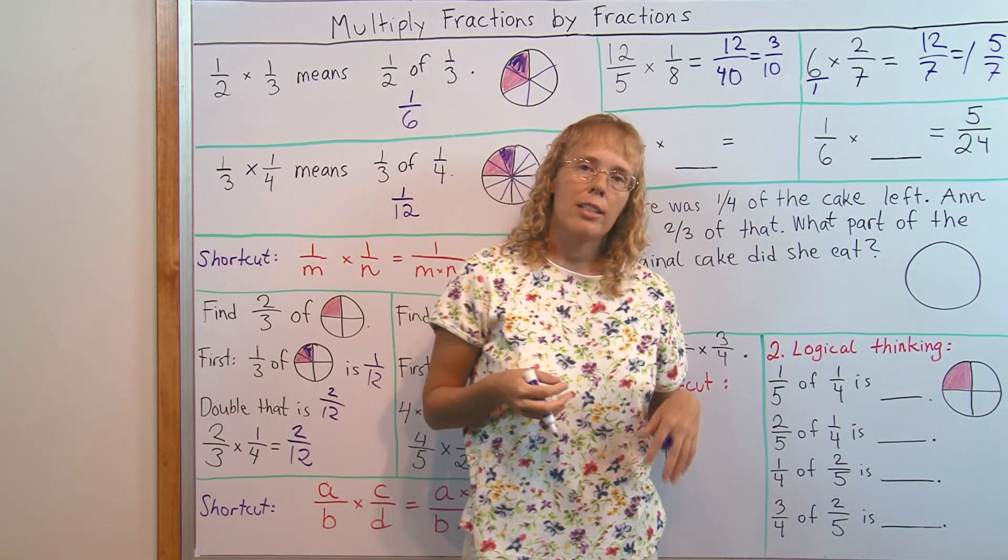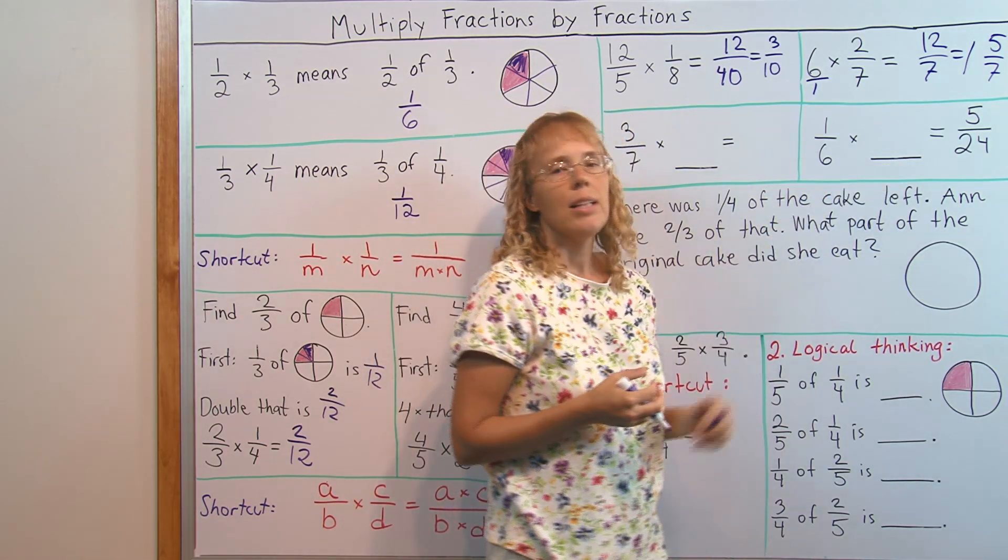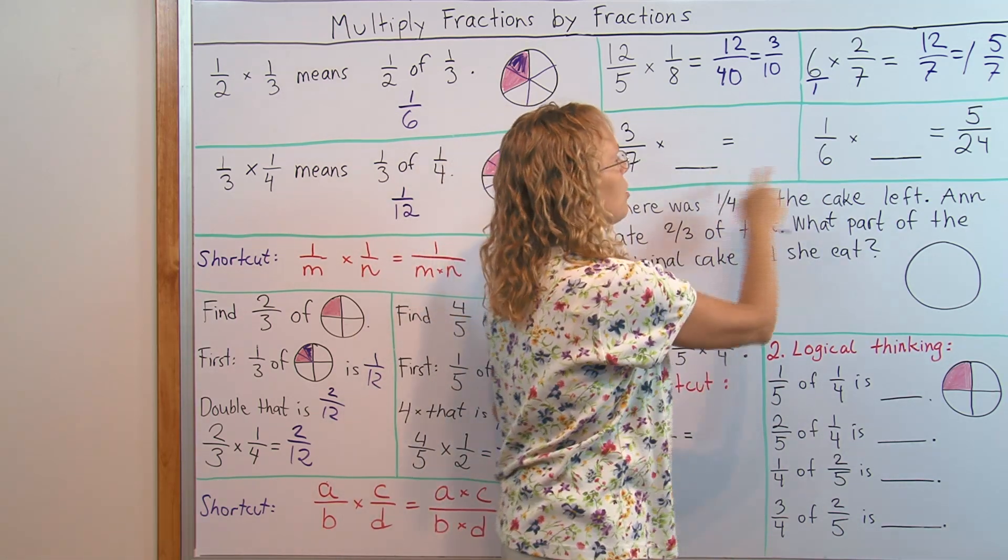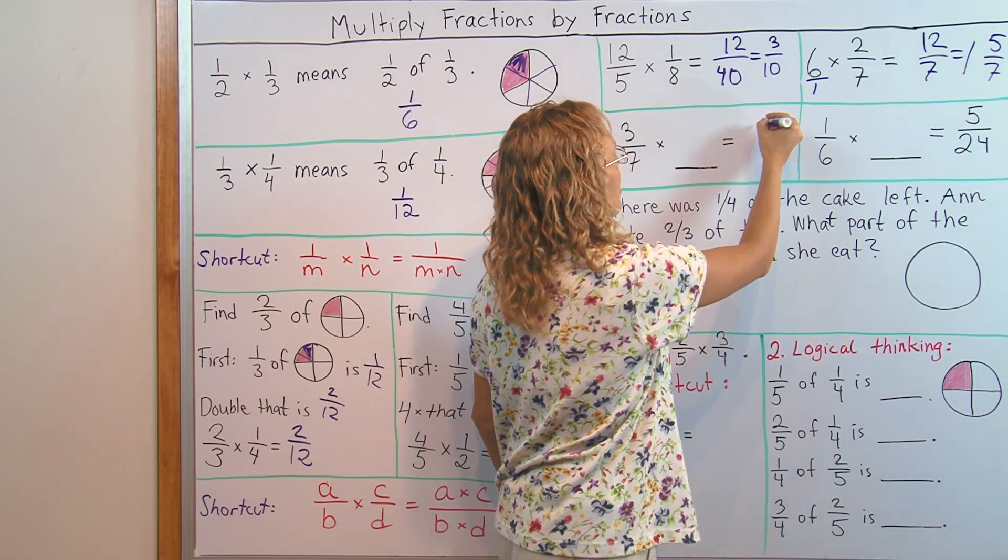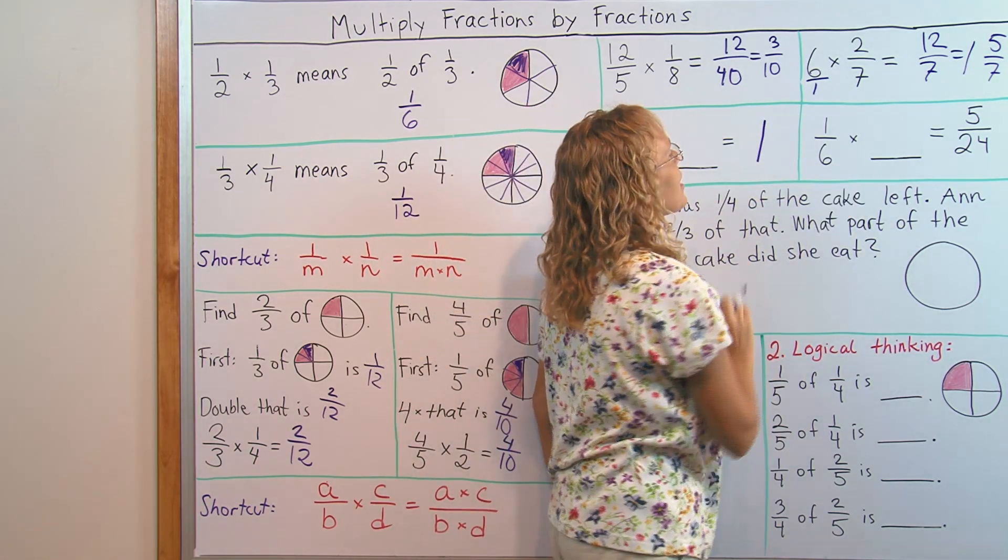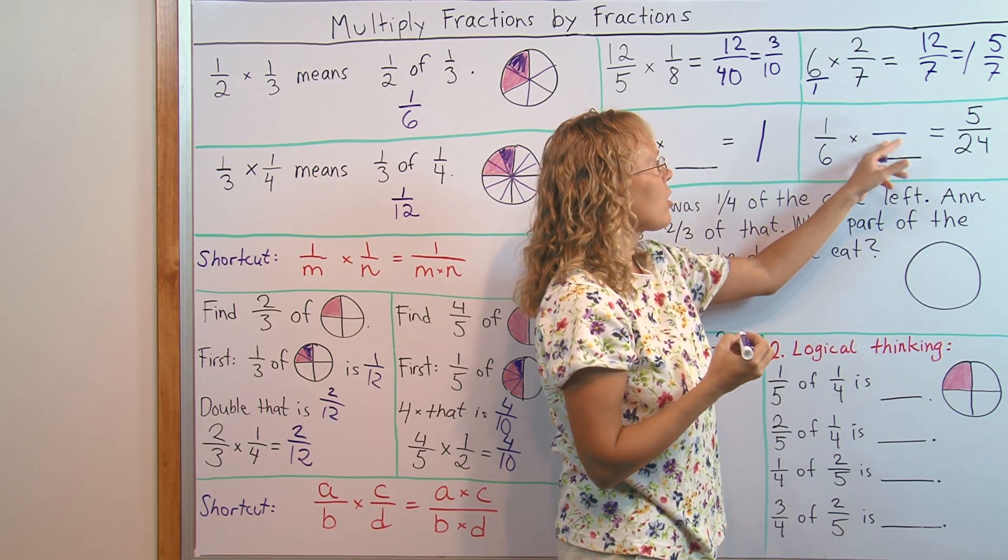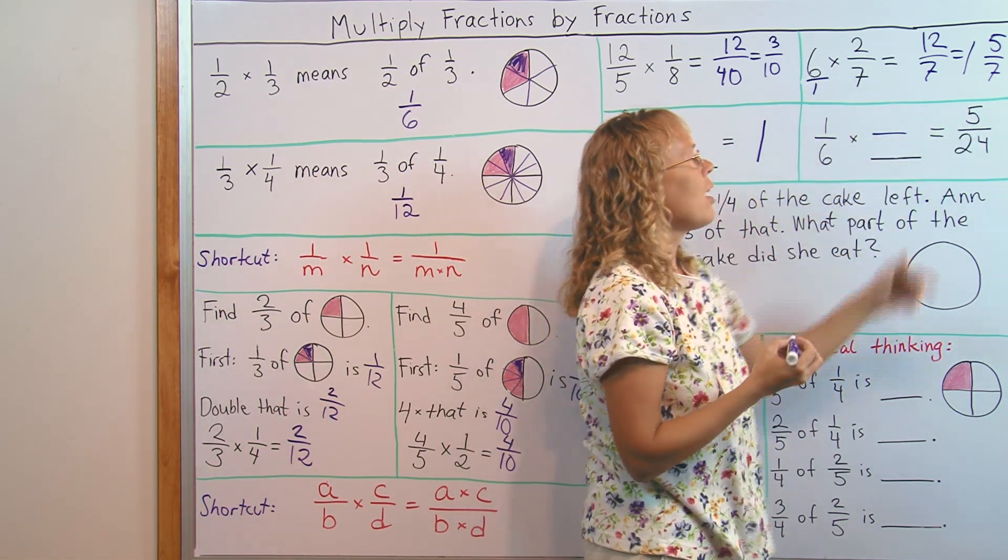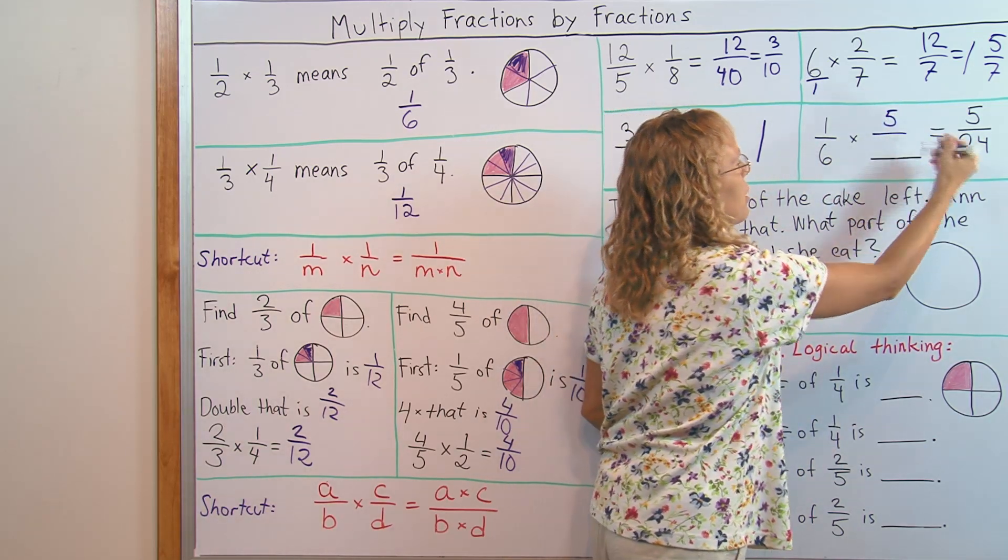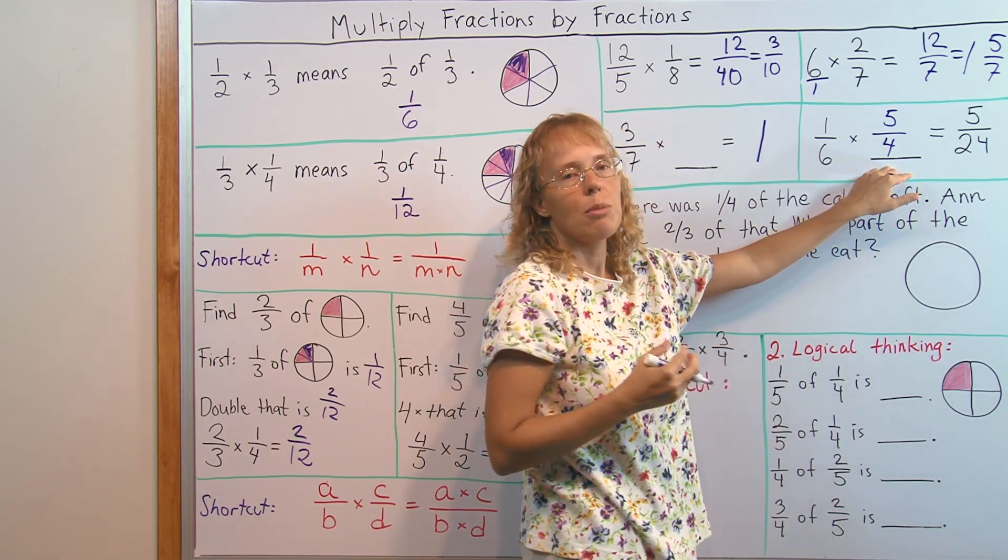I also like to give students some problems where there's a missing factor. Those are a little bit more challenging. And of these two, this is easier. Let's think of a fraction that can go in here so that 1 times something equals 5. Very easy, 5 goes there. And then 6 times something equals 24. 4 has to go there. So this would actually be the mixed number 1 and 1 fourth.